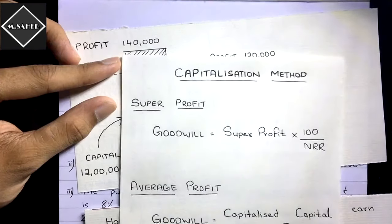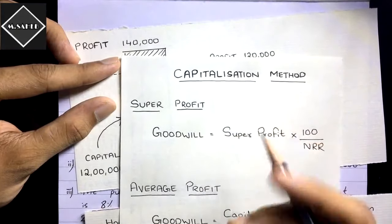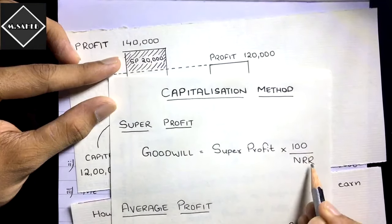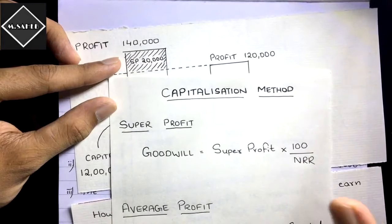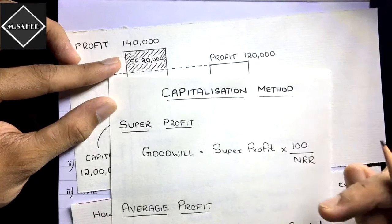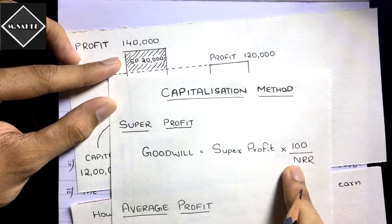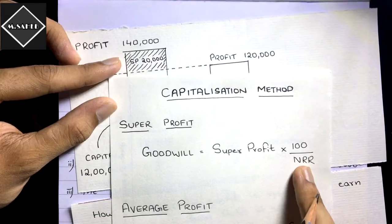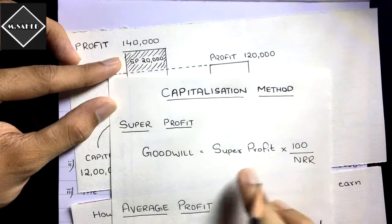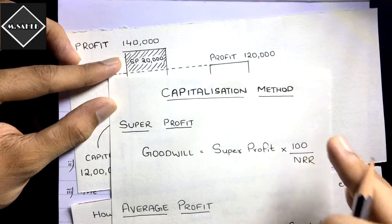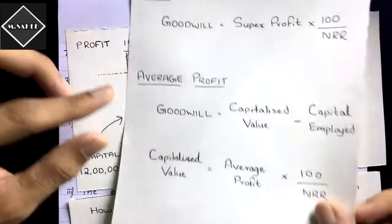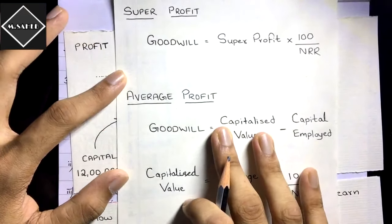This is what we do in the capitalization of super profit method. The formula is: Goodwill = Super Profit × 100 / NRR. In the normal profit formula we had NRR / 100, here we have just flipped it to 100 / NRR because we are finding how much extra capital is required to earn the super profit at the normal rate of return.